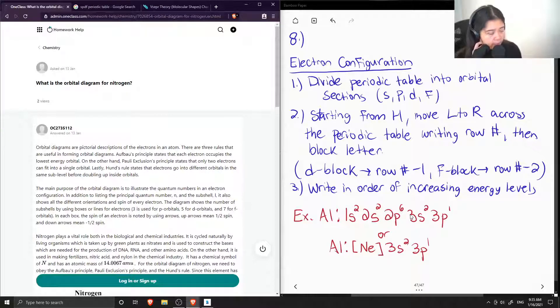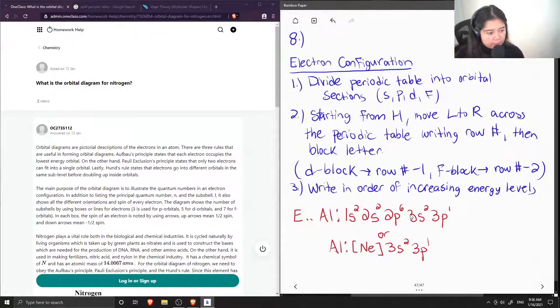Okay, so question 9 is what is the orbital diagram for nitrogen? So I'm going to keep up my rules for electron configuration to help answer this question and then I'll just make some room here.